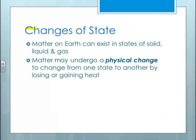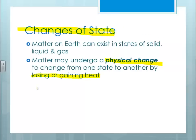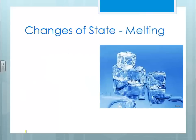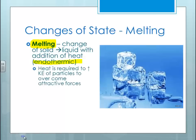With changes of state, matter may undergo physical changes to go from one state to another by either losing or gaining heat. When something loses heat, it is an exothermic process. When something gains heat, it is an endothermic process. Melting is the change of a solid going to a liquid — it is endothermic, meaning heat is required to increase the kinetic energy of the particles to overcome the attractive forces. The melting point is the temperature at which a solid becomes a liquid.